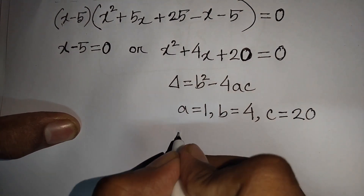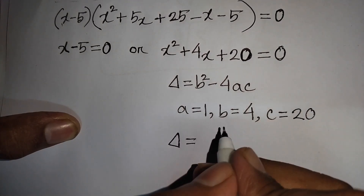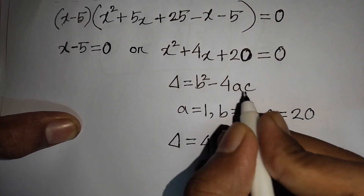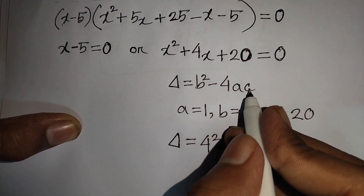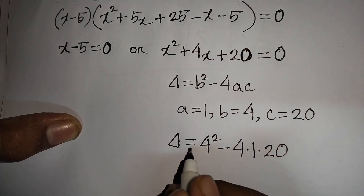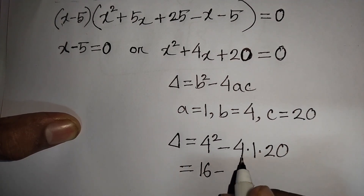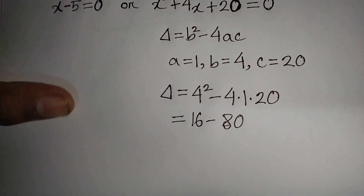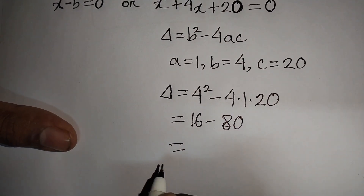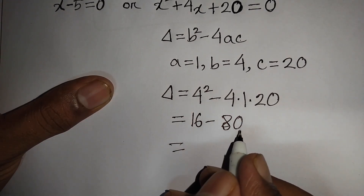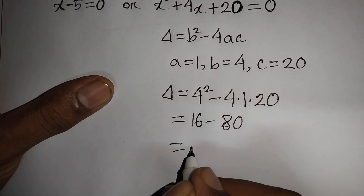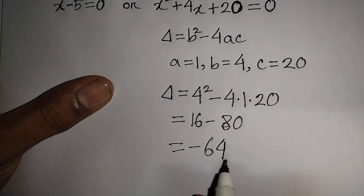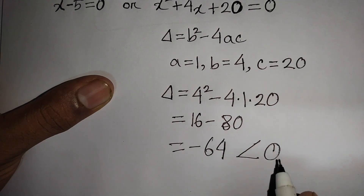Delta = b² - 4ac = 4² - 4 × 1 × 20 = 16 - 80 = minus 64. Since minus 64 is less than 0, b² - 4ac < 0, so there is no real solution from this factor.